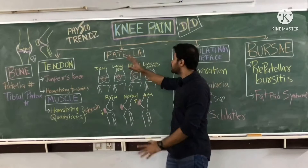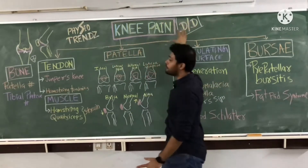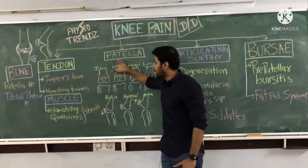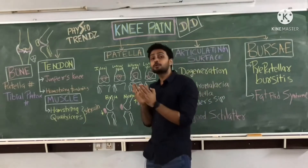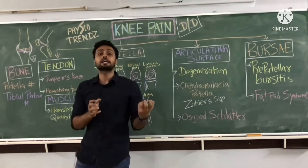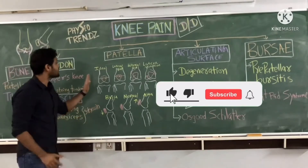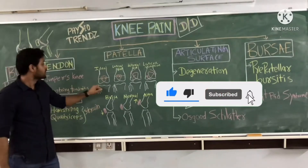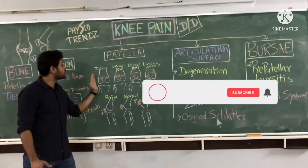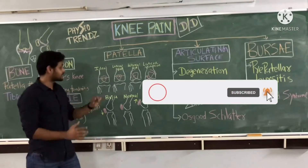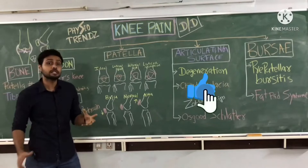Moving forward, this is a very important factor for analyzing knee pain — the patella. Any shifting in the patella can cause knee pain, and that is why we need to understand which directions patellar shifting can occur. First, I will tell you the ideal position of the patella: whenever we observe it, it has to be in the exact center position from the lateral to medial condyle. This is how the patella is positioned in the neutral position of the knee joint.